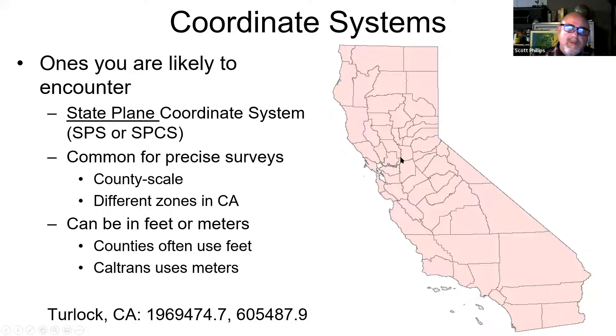So these are more common for very precise surveys at a county scale. If you're building bridges or surveying property, this would be a more applicable coordinate system than some of the other ones. One thing about this one is that because it's specific to the US, sometimes they can be in feet instead of meters. So the counties will often use this type of a coordinate system, but use feet as the units rather than meters. However, the State of California, Caltrans in particular, use the system, but they use meters instead of feet. So that's one thing you have to be mindful of.